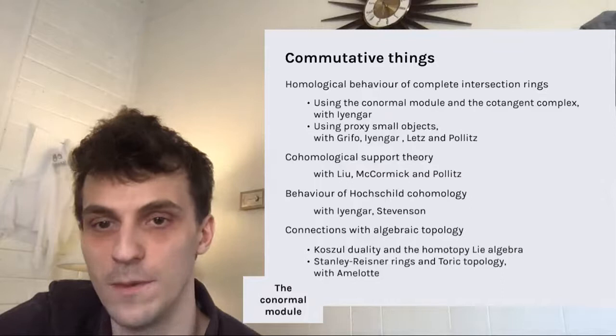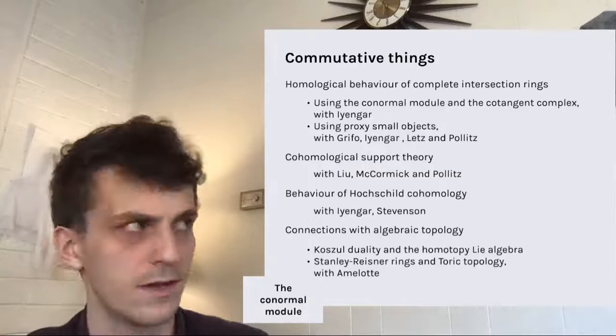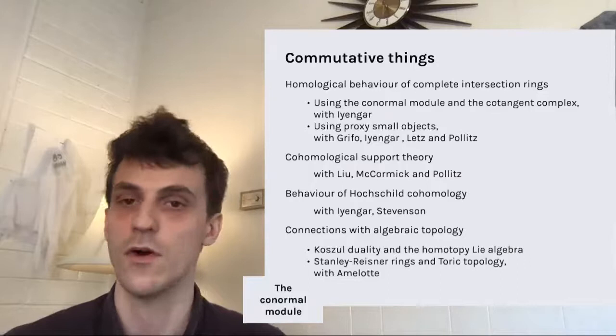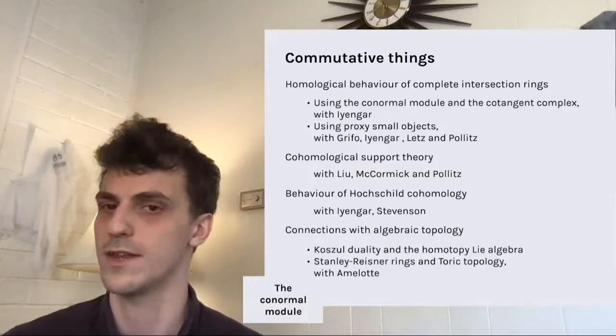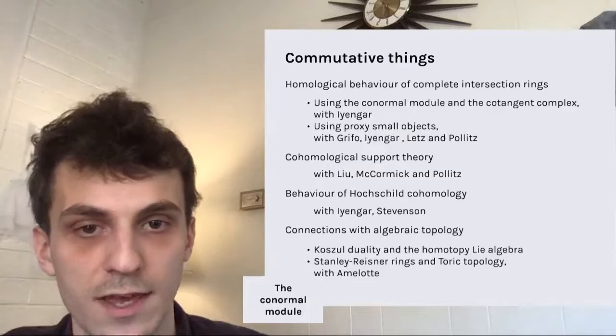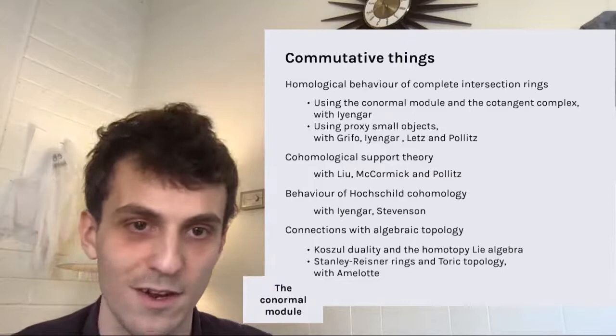The second approach is probably a bit more modern. These proxy small objects were defined by Dwyer, Greenlees, and Iyengar a while back, and after the work of Josh Pollitz, it's starting to seem like the complete intersection type behavior of a ring is controlled by these proxy small objects, in a similar way to how the regular behavior of a ring is controlled by its perfect complexes. I have some work going on about that with Eloise Ogrifo, Srikanth Iyengar, Janina Letz, and Josh Pollitz.